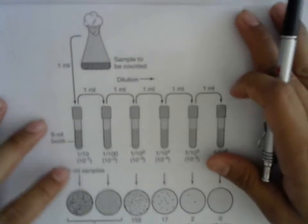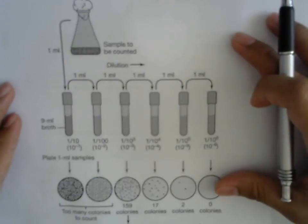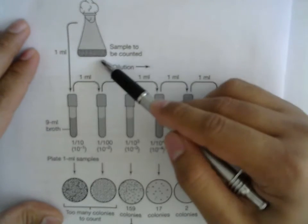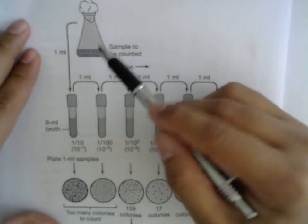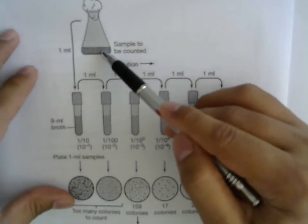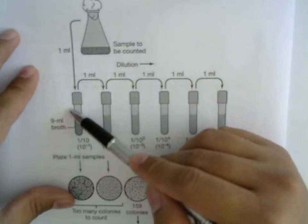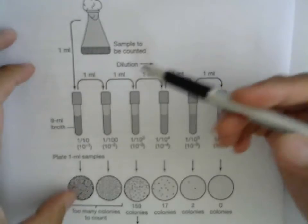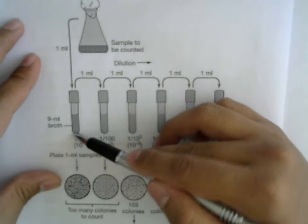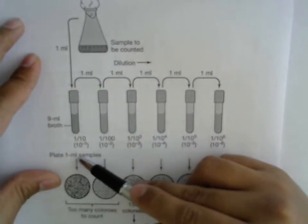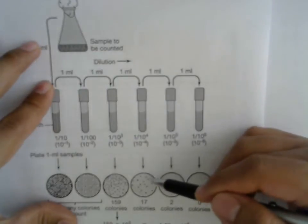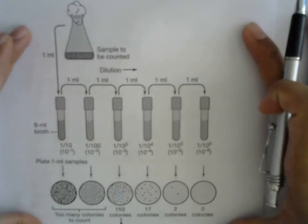We are going to talk about this diagram first — this is a part of your slides. We have a stock sample that we want to count; there is a lot of bacteria in here, and it is too concentrated to count directly. So what scientists do in the lab is dilute it — once, twice, three times, four times — into these test tubes. Then they take a one mL sample into a Petri dish, where all the bacteria will grow, and then we can count it.